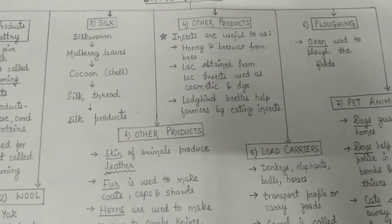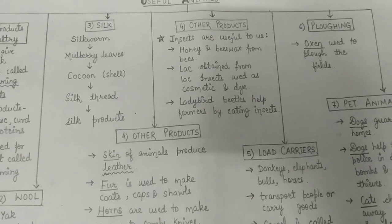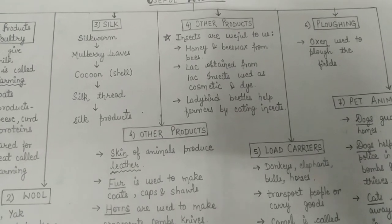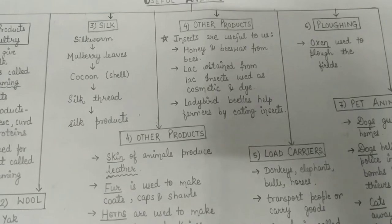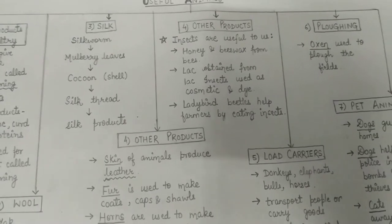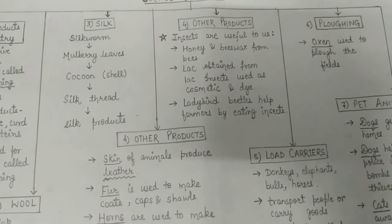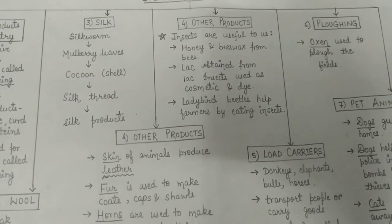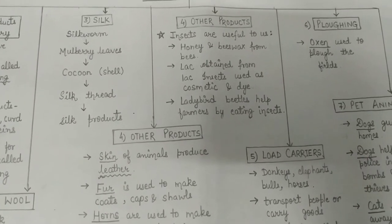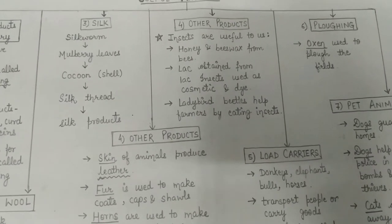The leaves of the mulberry plant are eaten by silkworms. Silkworms feed on the mulberry leaves and grow. After eating the leaves, they grow. Then silkworms spin a shell made of silk thread around themselves, which is known as a cocoon. We obtain the silk thread from the cocoon, and from the silk thread we make silk products.